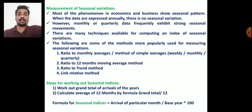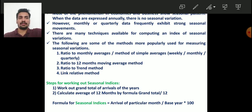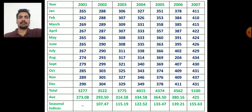The formula for seasonal indices is: arrival of a particular month divided by the base year value, multiplied by 100. In every time series data we take the first year as the base year. So the formula is: average of particular year divided by base year, multiplied by 100.